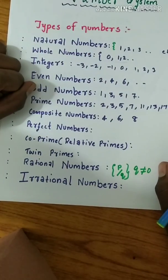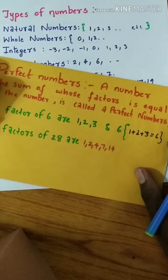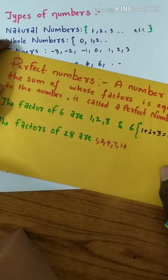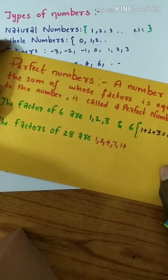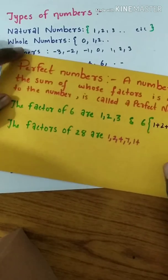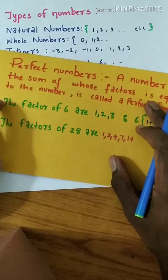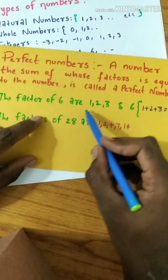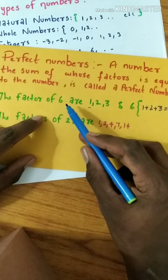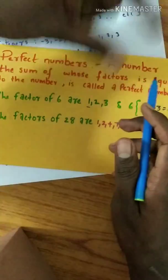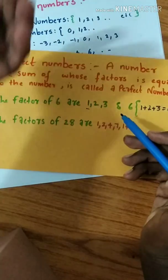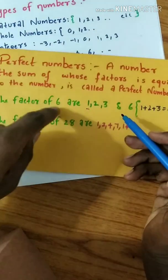Perfect numbers - a number whose factors, except the number itself, sum to equal the number. For example, 6. The factors of 6 are 1, 2, and 3. If you add all the factors (1 + 2 + 3), you get 6. This is a perfect number.